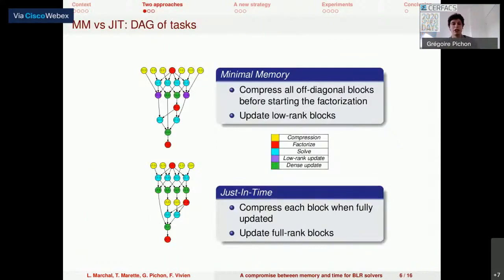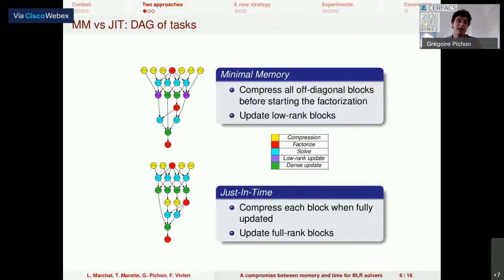There are two approaches to perform low-rank compression. The main feature of a sparse direct solver using low-rank compression is when compression is performed. In the PaStiX framework, we get two strategies. The first is named minimal memory: the idea is to compress all compressible blocks before starting the factorization, highlighted as yellow tasks on the DAG. Blocks are never allocated in their full-rank form, maximizing memory savings. The issue is that compressed blocks still receive contributions, introducing low-rank update operations which can be really expensive.